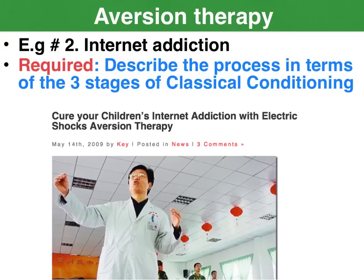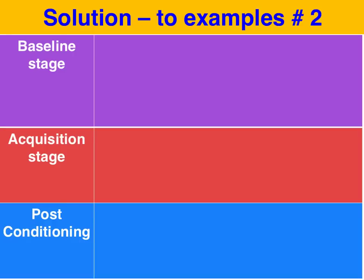Here's a relatively recent application of aversion therapy where it has been used to cure childhood internet addiction via shock therapy. I encourage you to pause the video and have a go at outlining what occurs during the three stages using the language of classical conditioning — in terms of the neutral, unconditioned, and conditioned stimulus, as well as the unconditioned and conditioned response.